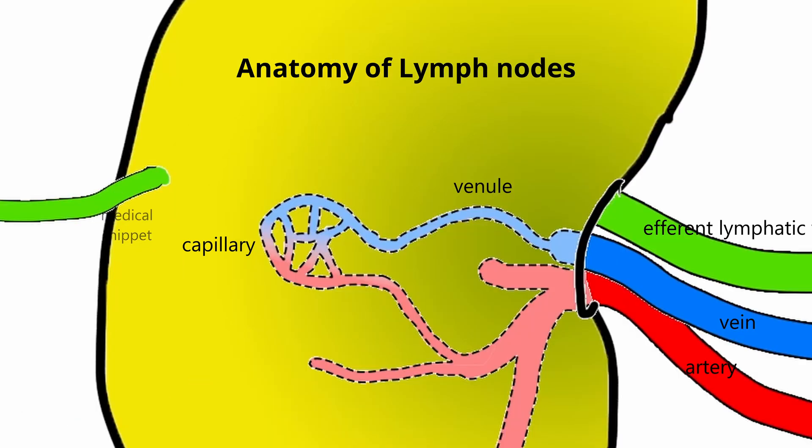There is a specialized swelling of the post-capillary venules in the lymph node. These swellings are called high-endothelial venules. High-endothelial venules are the sites of trans-endothelial migration of circulating lymphocytes into the lymph nodes. High-endothelial venules are present in all secondary lymphoid organs, except for the spleen.